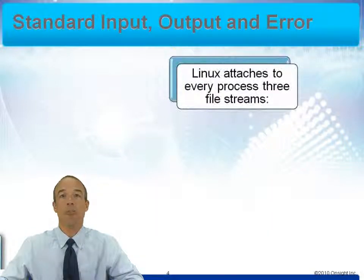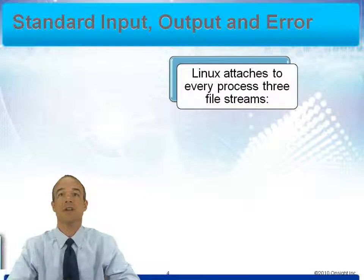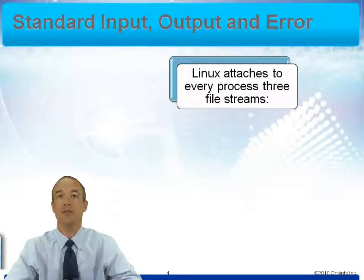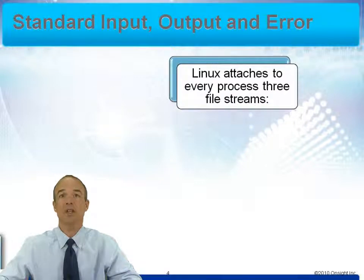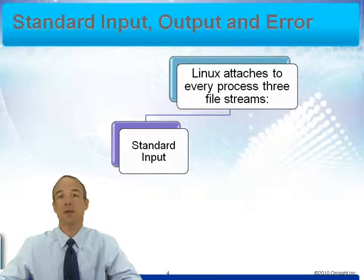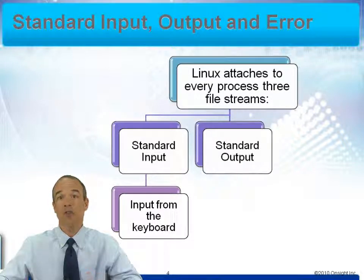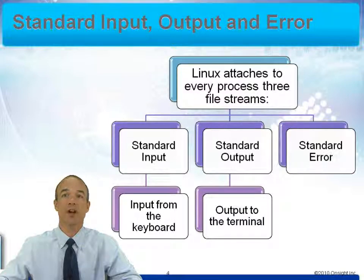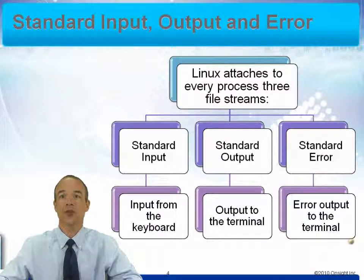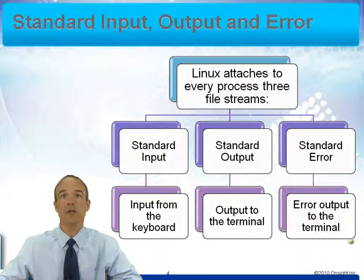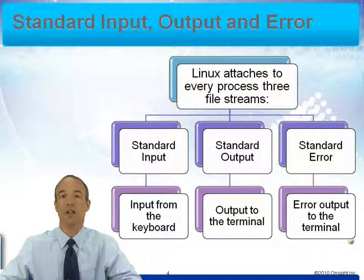Linux attaches to every process these three file streams. A file stream is either a way to get information or a place to send information. The three streams are Standard Input, typically the keyboard; Standard Output, typically output to the terminal; and Standard Error, where error messages go — which also typically goes to the terminal. These three streams can be manipulated in the shell, and that's what we're going to demonstrate now.